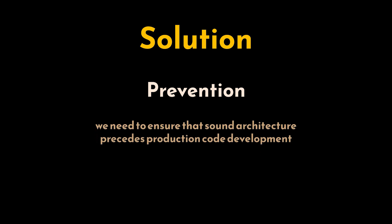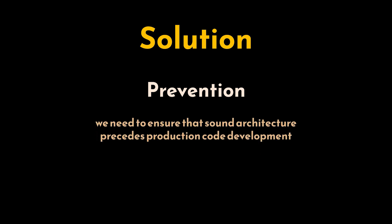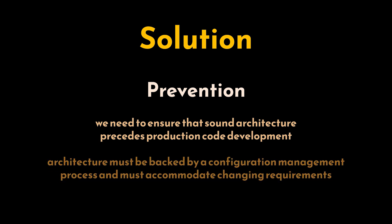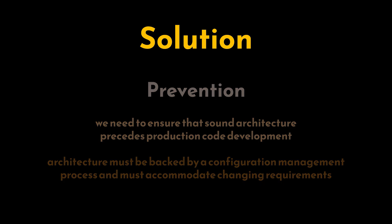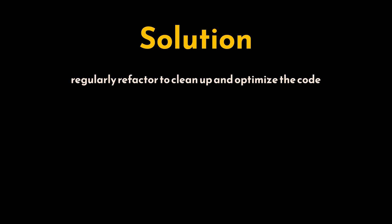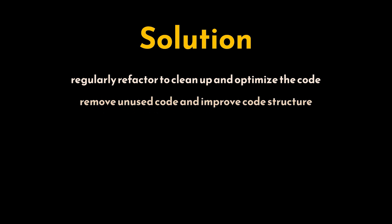What are the possible solutions to dead code or the lava flow anti-pattern? There is only one main way to prevent it, and that is prevention. We need to ensure that code architecture precedes production code development. This architecture must be backed up by a configuration management process that ensures architectural compliance and accommodates changing requirements. Other secondary solutions include regularly refactoring the code by implementing a regular refactoring schedule to clean up and optimize the codebase, including removing unused code and improving code structure.